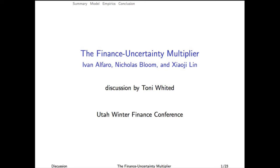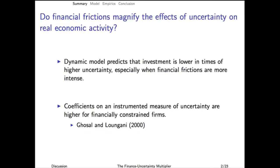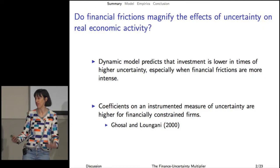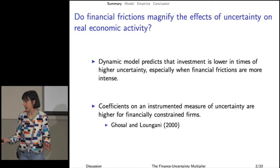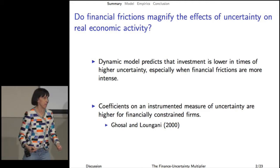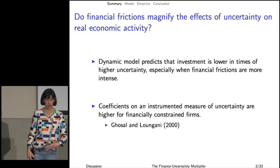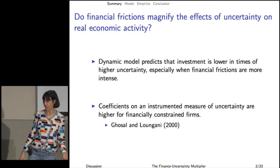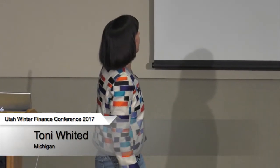Thanks again for inviting me. This paper has two conclusions. First, it's asking a super interesting and relevant question: do uncertainty shocks matter for investment, and are these shocks more important when firms face financial frictions? They do this in two ways — they write down a dynamic model showing what falls out theoretically, and then they do empirical work showing that coefficients on this instrumented measure of uncertainty are larger for financially constrained firms. This echoes an old paper in the Review of Economic Statistics, which was less focused and not as carefully theoretically oriented, but they should cite that paper. So I have much to say. I want to spend quite a bit of time outlining the intuition of the model, and then I just have one little suggestion for the empirical work.